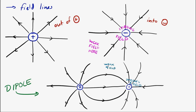One good thing about the electric field lines is that they indicate the direction of the field. Electric field is a vector, so you get the direction from these field lines.